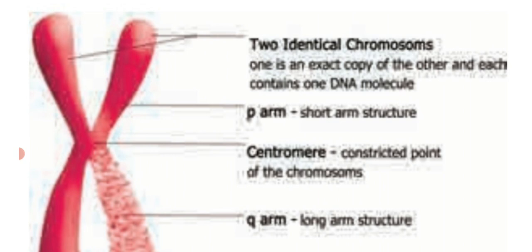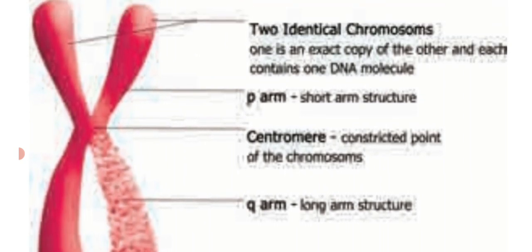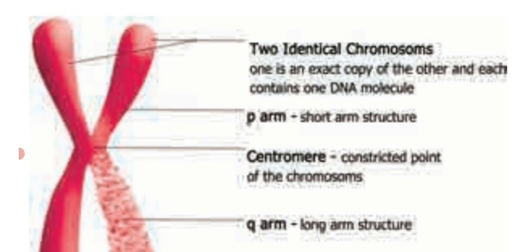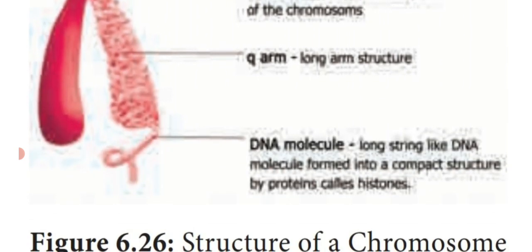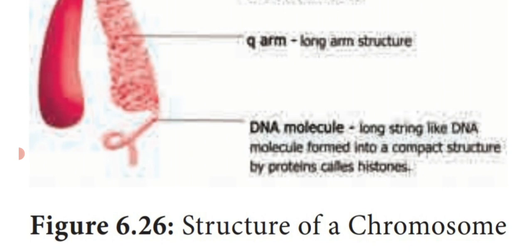In the structure of a chromosome, the center region is known as the centromere, which contains two arms. The short arms are known as the p arm and the long arms are known as the q arm. These are the two identical chromatids - the original one and its exact carbon copy. Each chromosome consists of one DNA molecule.